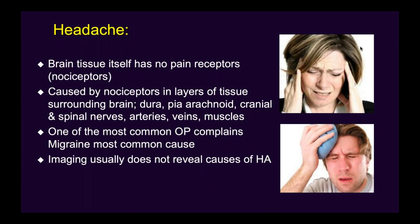Why does it hurt? The brain tissue itself has no pain receptors — nociceptors do not exist in brain tissue. That's why a neurosurgeon can cut the brain and the patient doesn't say it hurts. The headache or pain typically comes from tissue surrounding the brain, such as the meninges, the dura, the peri-arachnoid, cranial nerves, spinal nerves, arteries, veins, and muscles — the soft tissue. Those are the places that have pain receptors.